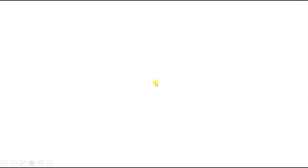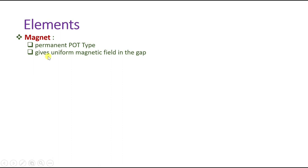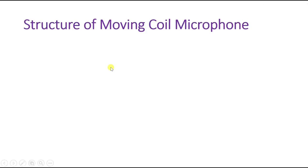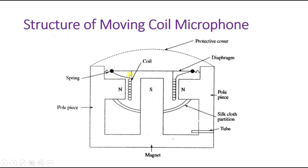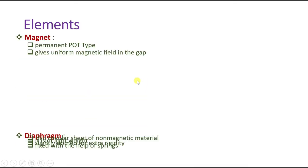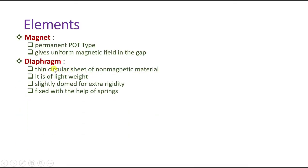Let us understand the elements step by step. We have a permanent magnet that generates a uniform magnetic field in the gap. We also have the diaphragm, which is a circular sheet of non-magnetic material. It is very light in terms of weight and is attached with a spring. For a little more rigidity, it is connected with an extra dome.